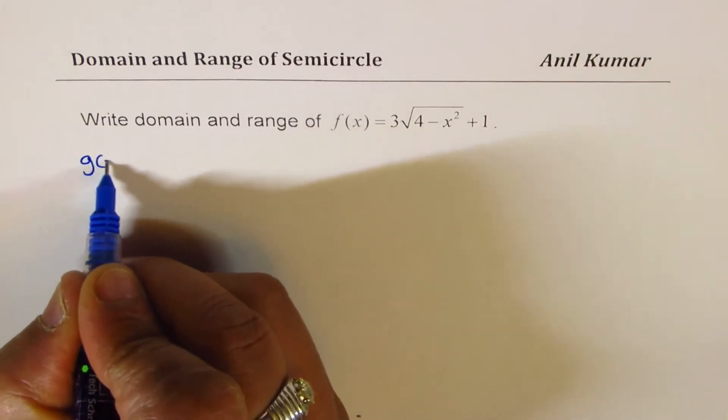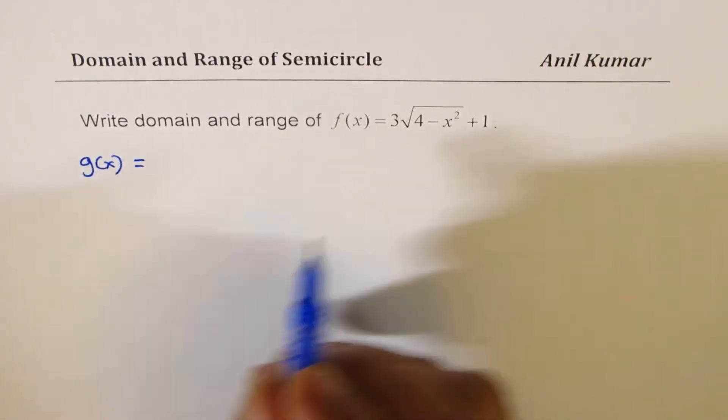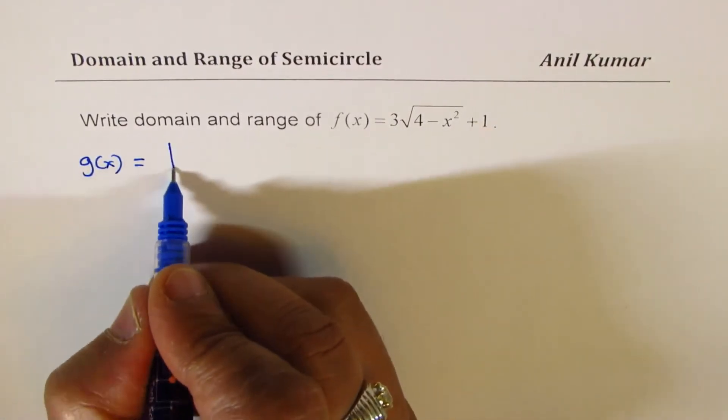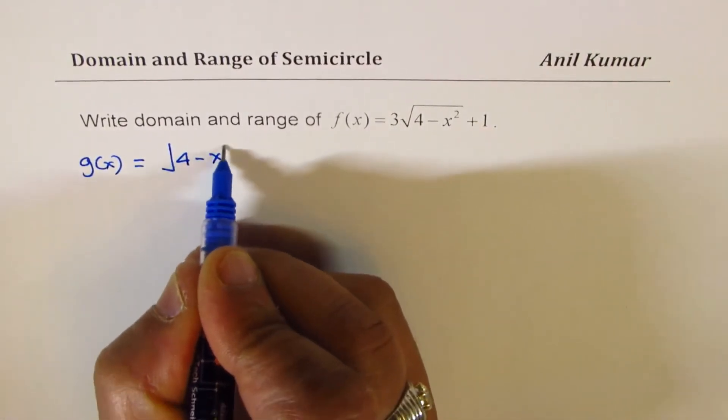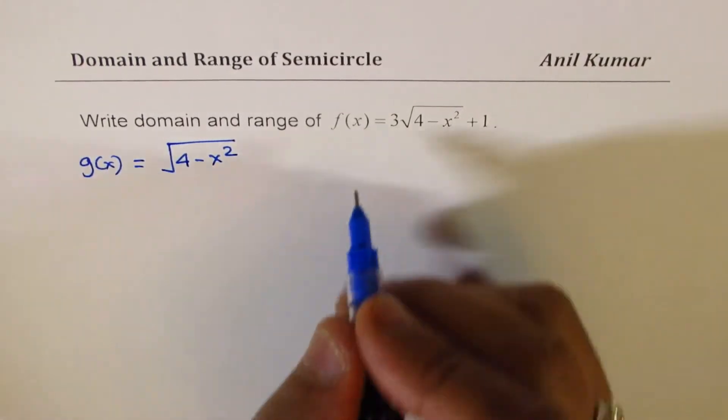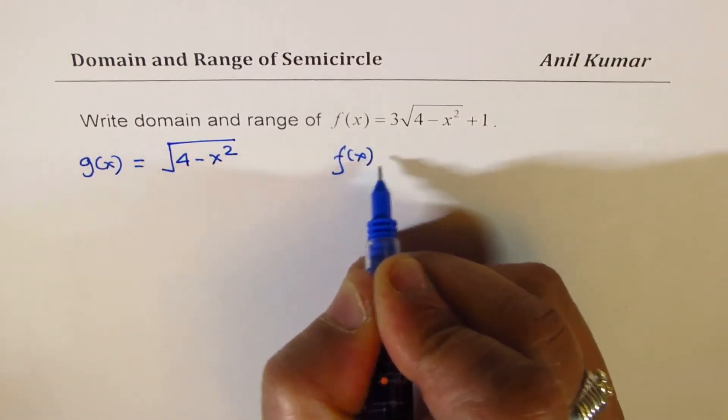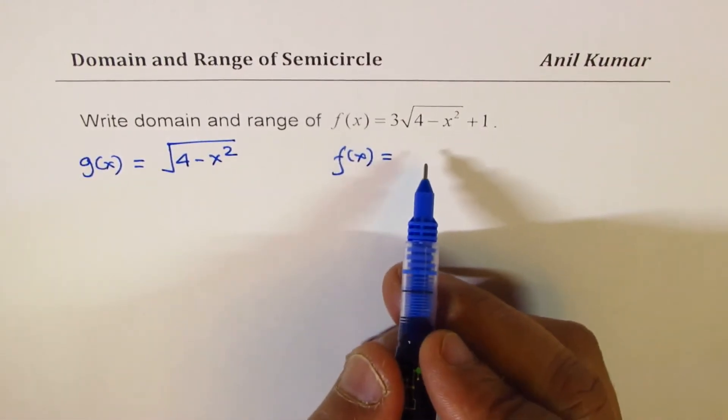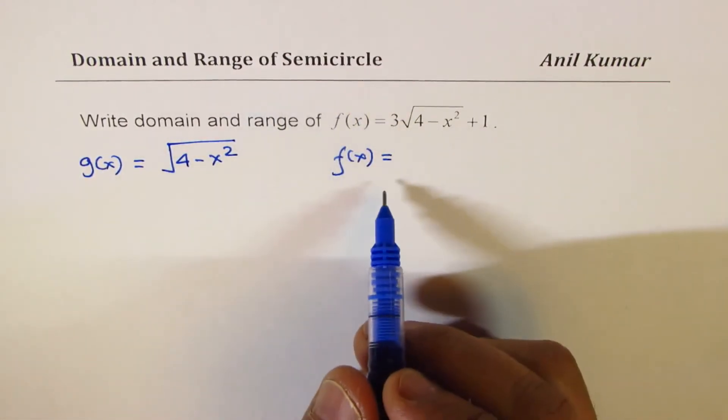Let us see that first. Let me define another function here first. g(x) equal to only the inside part, square root of 4 minus x squared. So I'll work with this and then we get to f(x). I'm using transformation here, another strategy, to answer your question.